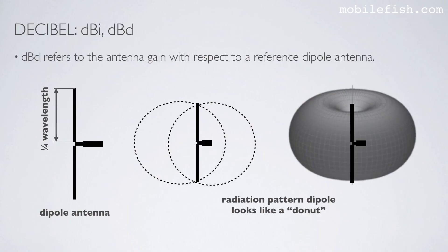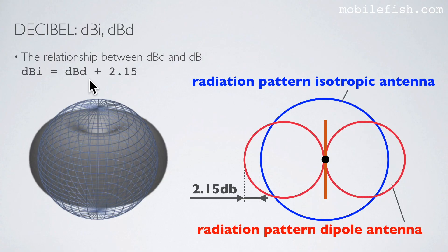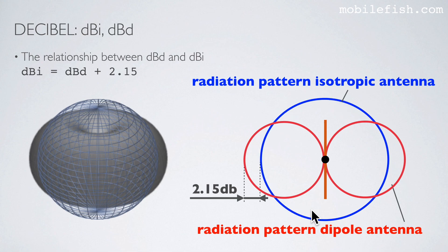dBd refers to the antenna gain with respect to a reference dipole antenna. The dipole antenna consists of two metal rods, each a quarter wavelength in size. Its radiation pattern looks like a doughnut. The relationship between dBd and dBi can be expressed with this equation. The isotropic antenna sends the signal out in every direction, while a dipole antenna focuses the signal more on a horizontal plane perpendicular to the antenna. This shows the radiation pattern of the isotropic antenna versus the dipole antenna.